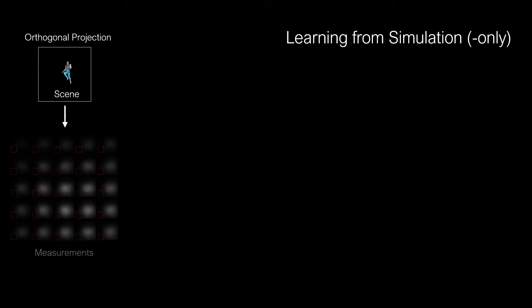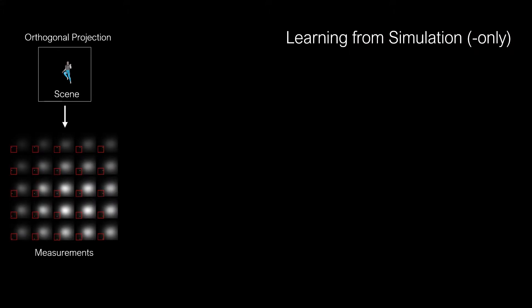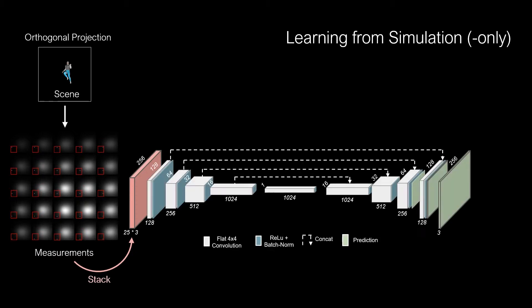To tackle general objects, we learn the previously explicitly encoded scene prior by relying on simulation only. We learn to map a stack of measurements for different light positions to an orthogonal projection of the scene, using a modified unit with multi-scale loss.